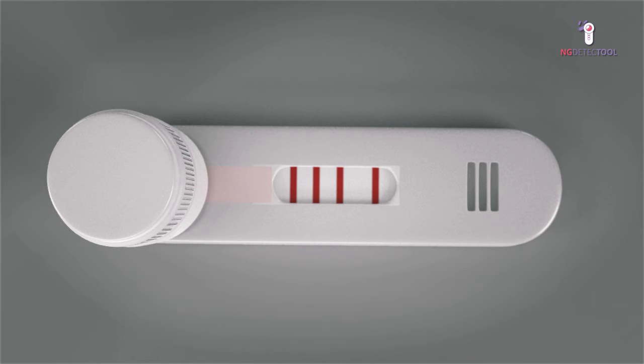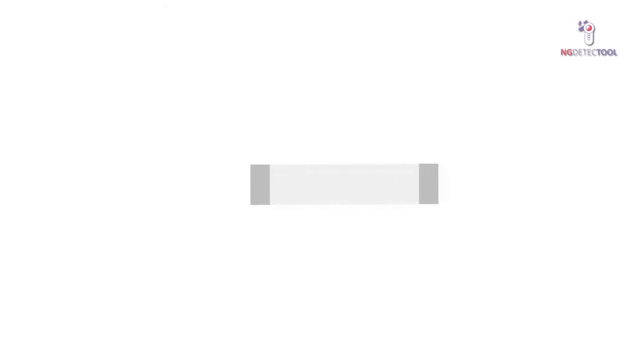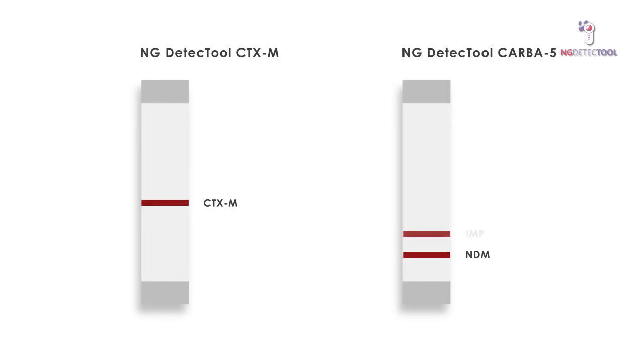The presence of an ESBL or carbapenemase in the sample tested will be detected simply by looking to see if a band appears in any of the test lines. For the NG-Detect tool CTX-M, a single test line will appear. In the case of CARBA-5, five different bands can appear, corresponding to each of the carbapenemases tested.